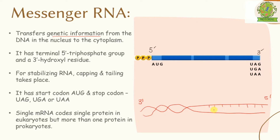This DNA has to produce RNA. Suppose the base pairs on the template strand go: A, G, C, T, and so on. An RNA strand comes along and produces the corresponding complementary base pairs. If A is present on the DNA, the RNA pairs with uracil (U) instead of thymine. For G it is C, for C it is G, and for T it is A.